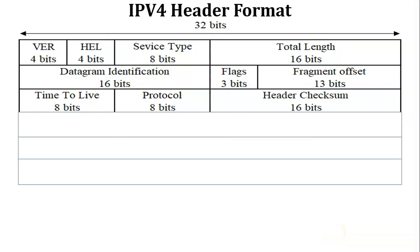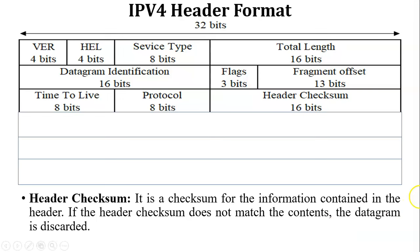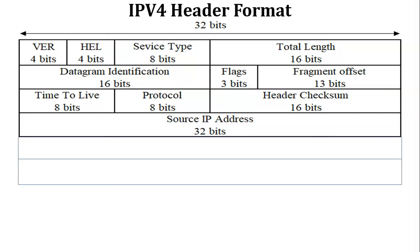The next field is Header Checksum, which contains 16 bits of data. Header Checksum consists of information contained in the header and is used to check the integrity at the receiver side. If any field in the header is changed during transmission, the value of the Header Checksum field will change. If the checksum does not match at the receiver side, the datagram is discarded. We can also say Header Checksum is used for security purposes.